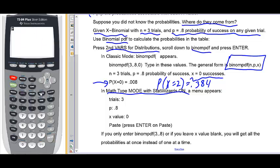Stat wizards are on. Math type is on. Now, second distributions. Scrolling down to find binomial pdf. There it is. And see this time we get a menu.